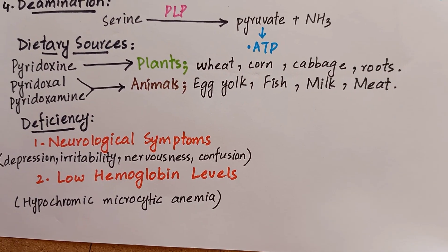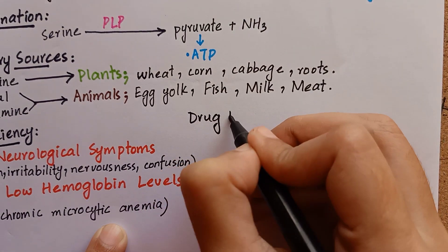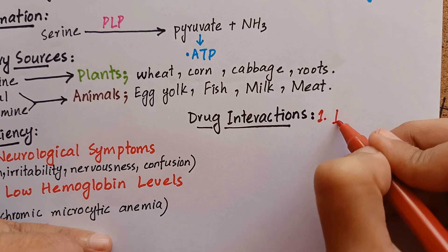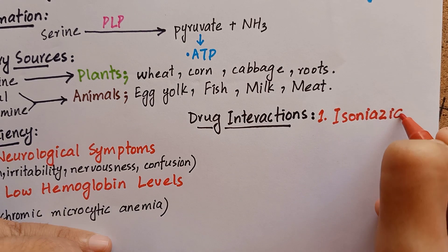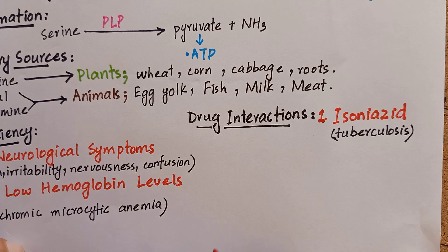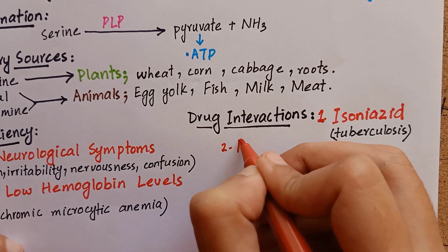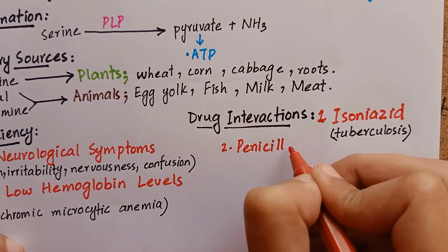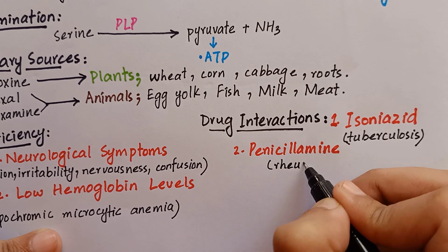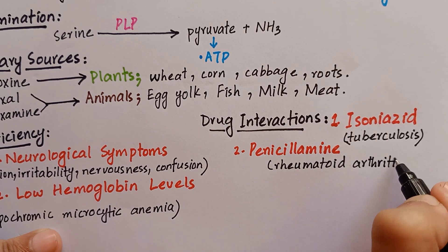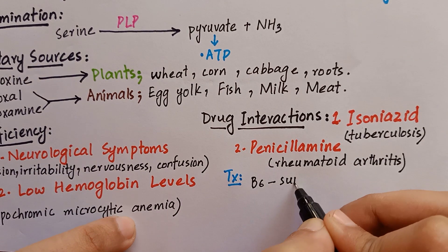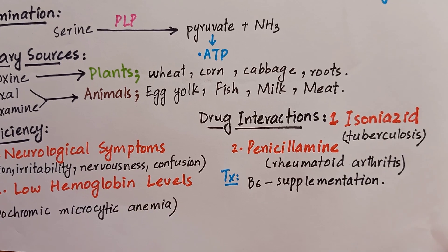Some drugs also cause vitamin B6 deficiency. For example, isoniazid, a drug frequently used to treat tuberculosis, forms an inactive derivative with pyridoxal phosphate, inhibiting all the enzymes which depend on it. Another drug, penicillamine, used in the treatment of rheumatoid arthritis, also reacts with pyridoxal phosphate to form an inactive derivative. Therefore, administration of these drugs should be accompanied by dietary supplementation of vitamin B6 to avoid deficiency symptoms.